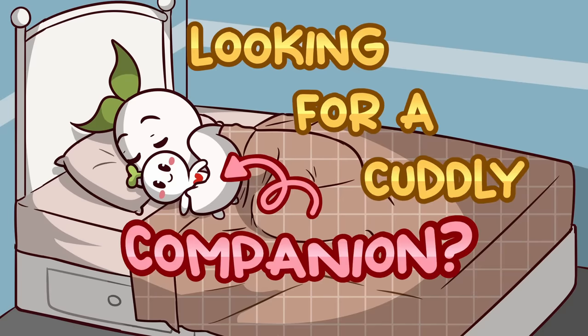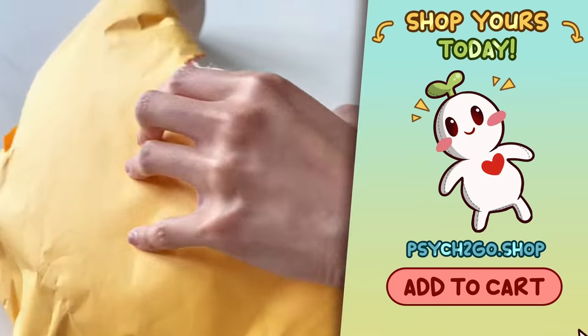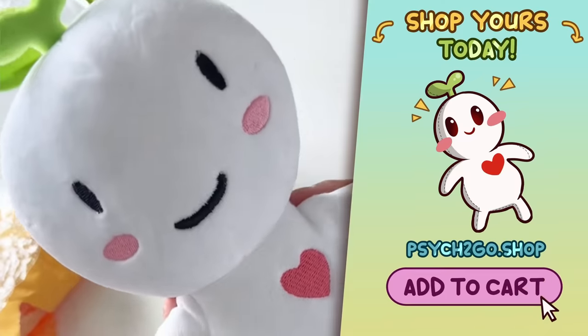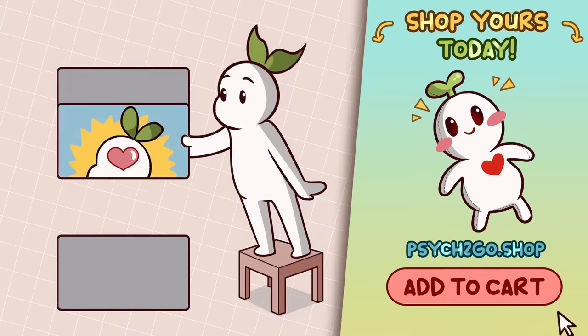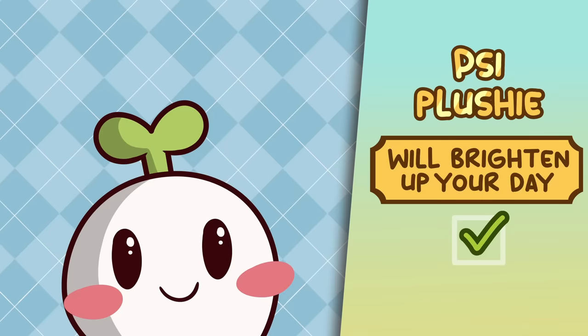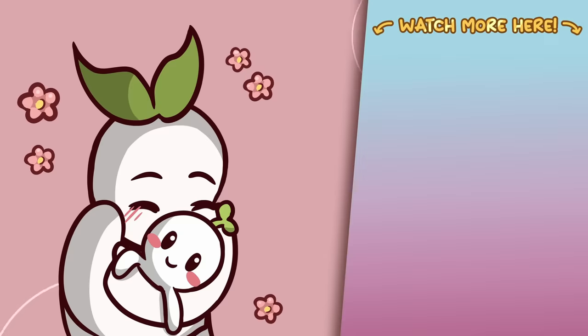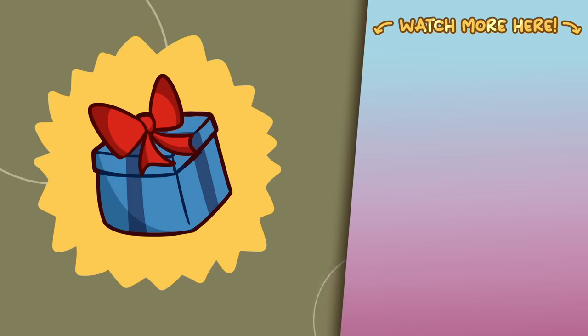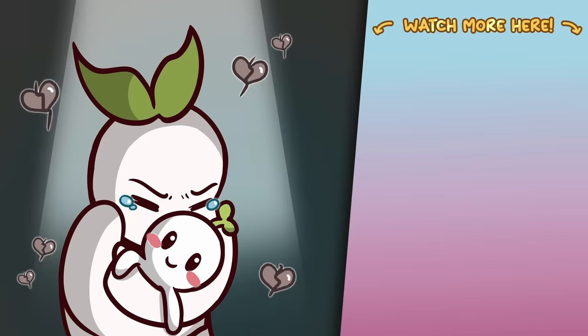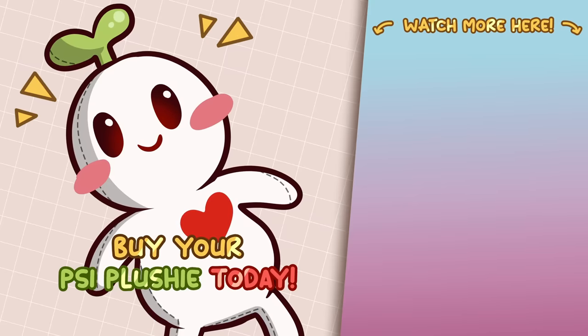Are you looking for a cuddly companion that brings positivity and mental wellness to your daily life? Get your very own Sai. The Lovable Plushie is here to brighten your days. It embodies the spirit of Psych2Go and it serves as a reminder to prioritize your mental well-being. Its green leaf symbolizes growth, renewal, and the importance of self-care. Whether it's for yourself or as a thoughtful gift for a loved one, Sai is ready to be your snuggly friend through all of life's ups and downs. Buy your Sai Plushie today. Link is listed in the description box.